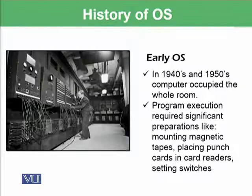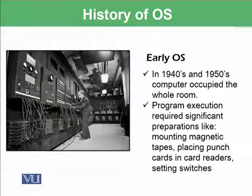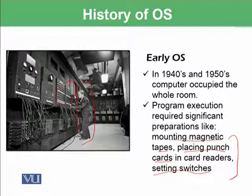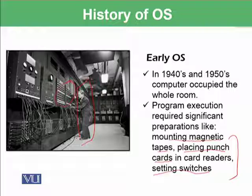Early operating systems of the 1940s and 1950s were occupying the whole room, and program execution required significant preparations. For example, we needed to mount magnetic tapes, place punch cards for data retrieval and storage, and set switches. All such activities were performed by a human who was in charge of that time's computer, doing the mounting of magnetic tapes, placing punch cards, and setting up the switches.